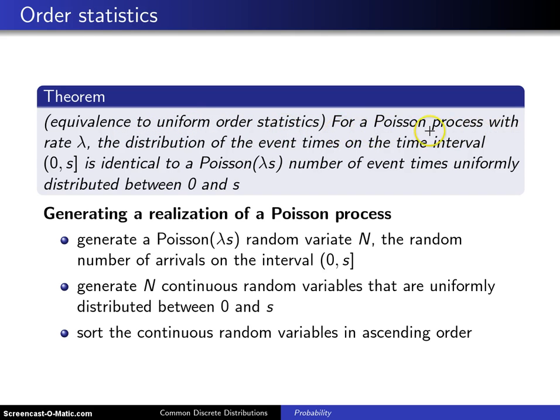For a Poisson process with rate lambda, the distribution of the event times on the time interval (0,s) is identical to a Poisson(λs) number of event times uniformly distributed between 0 and s.